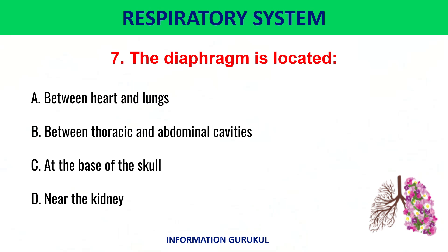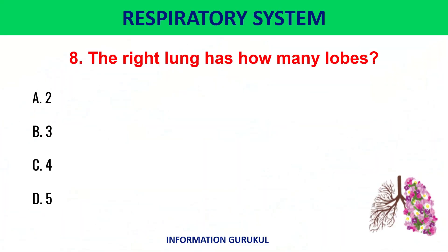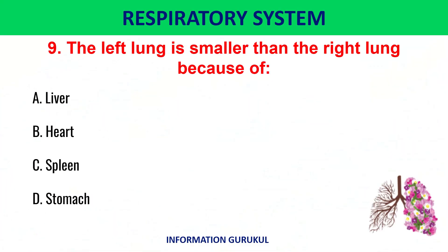The diaphragm is located between the thoracic and abdominal cavities. The right lung has how many lobes? Three. The left lung is smaller than the right lung because of the heart.